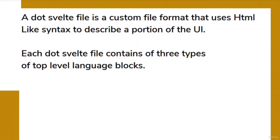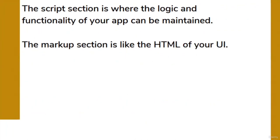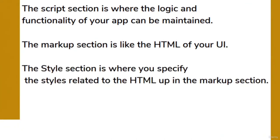Each .svelte file consists of three sections: script, markup, and style. The script section is where the data and logic for the markup is maintained — it's like the JavaScript of your UI. The markup section is the HTML of your UI and defines the structure. The style section is where you specify styles related to the HTML in your markup section. The script section goes within the script tag, the style section within the style tag, and everything else is part of the markup section.